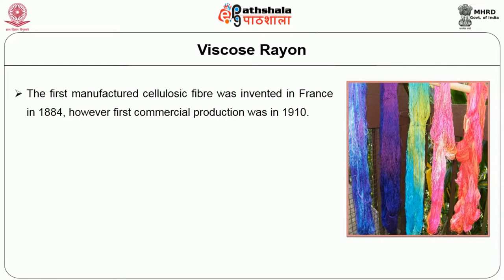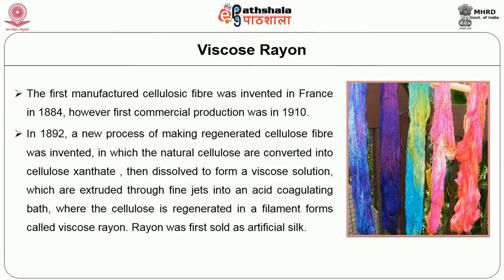Viscose Rayon was the first manufactured cellulosic fiber, invented in France in 1884. However, first commercial production was in 1910. In 1892, a new process of making regenerated cellulose fiber was invented, in which the natural cellulose is converted into cellulose xanthate, then dissolved to form a viscous solution, which is extruded through fine jets into an acid coagulation bath, where the cellulose is regenerated in a filament form, called Viscose Rayon.